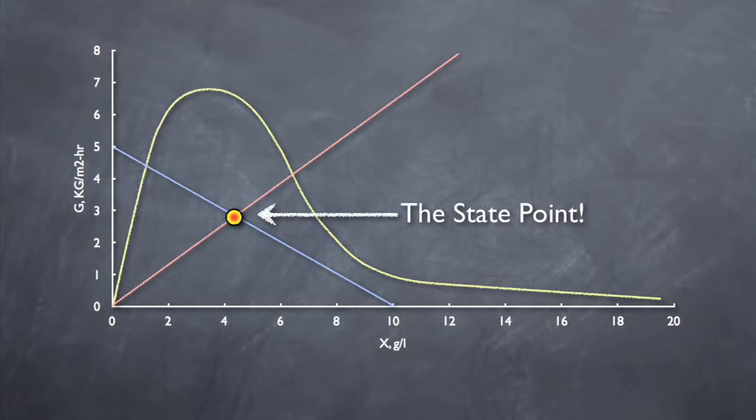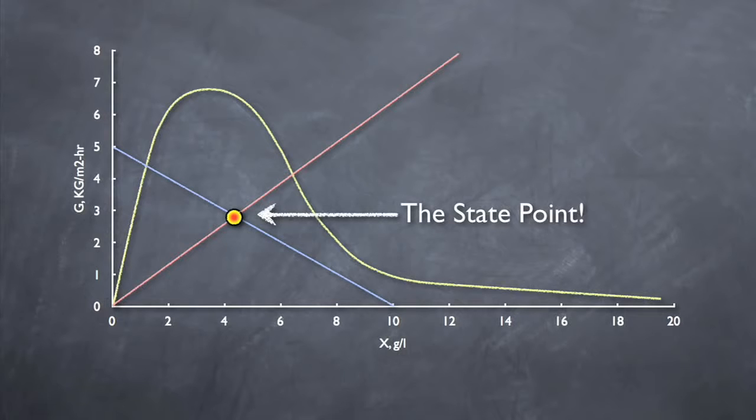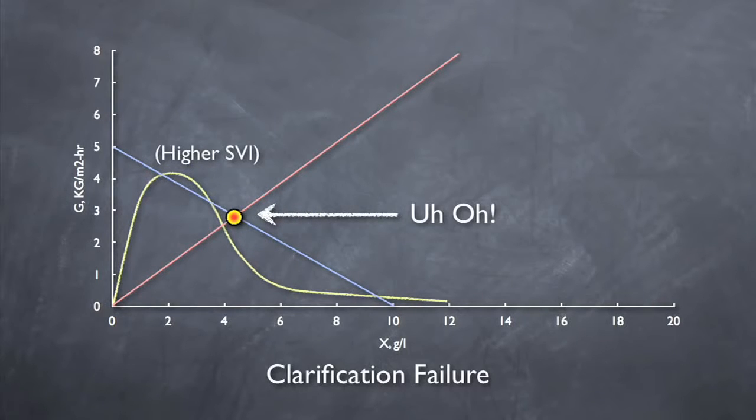We start by defining the actual state point. This is the point where the overflow rate line and the underflow rate line intersect. To ensure proper clarification, we want to make sure that this point falls underneath the settling curve. If this point falls above the settling curve, the clarifier is failing in clarification. In other words, the solids entering the clarifier don't have enough time to settle before going over the effluent weir.